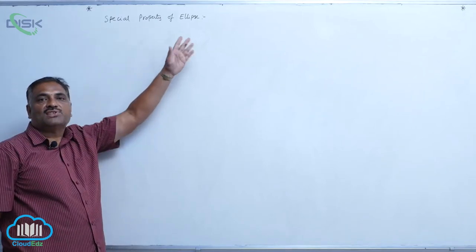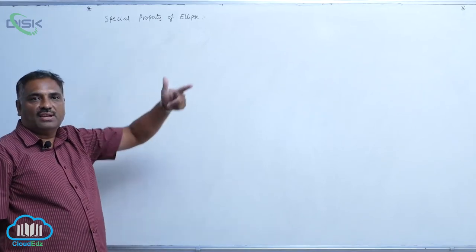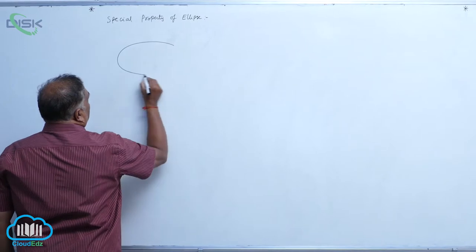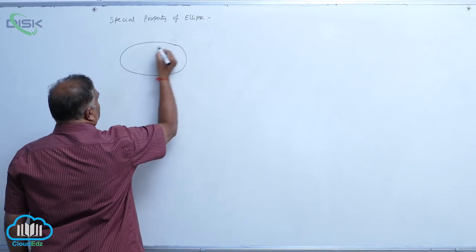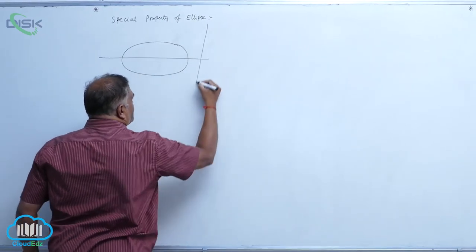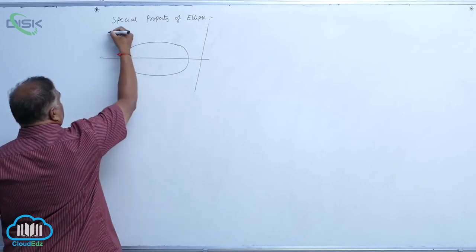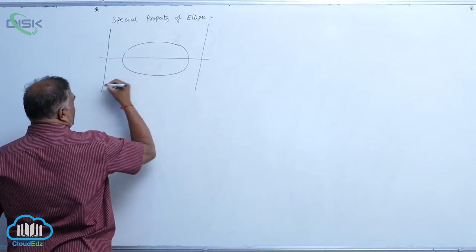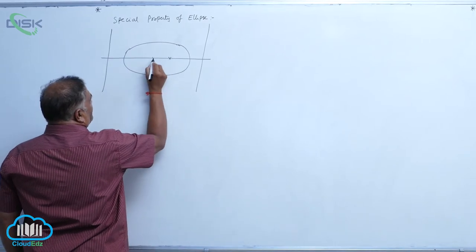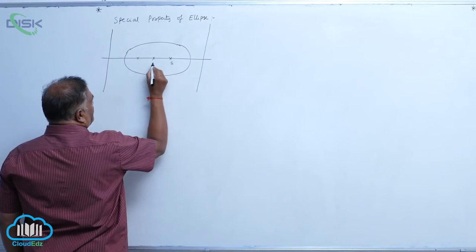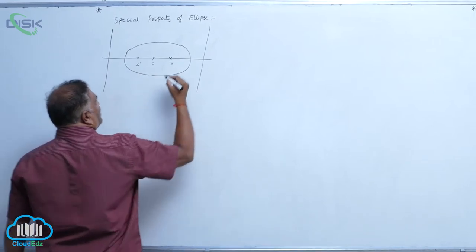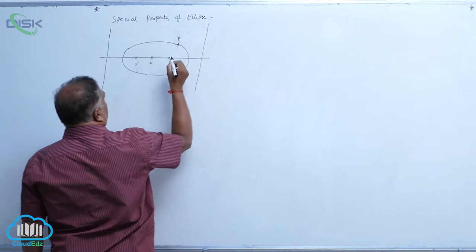We will discuss a special property of ellipse. Let us consider an ellipse equation. This is the first directrix, second directrix — you can see very clearly. This is S, C, and S dash. Let us take a point P here.